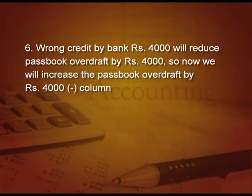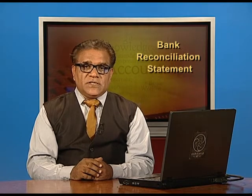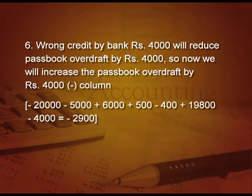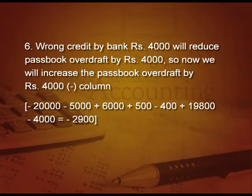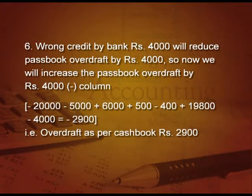Point number 6: wrong credit by bank, 4,000. This will reduce the pass book overdraft by 4,000. So now we will increase the pass book overdraft and go to the minus column and write 4,000. The final calculation is: minus 20,000 to start, minus 5,000, plus 6,000, plus 500, minus 400, plus 19,800, and minus 4,000, giving a balance of 2,900 rupees — that is overdraft as per cash book, 2,900.